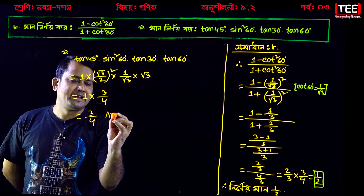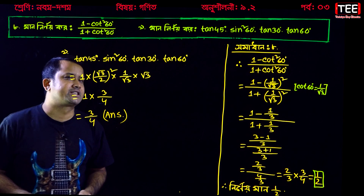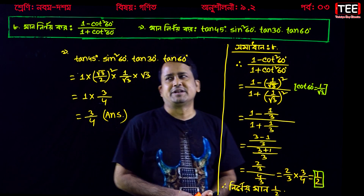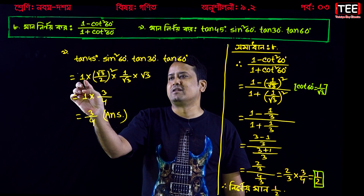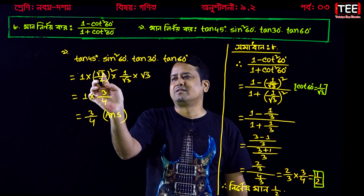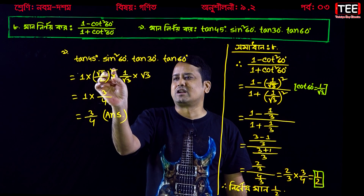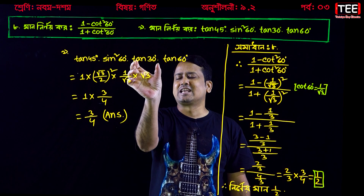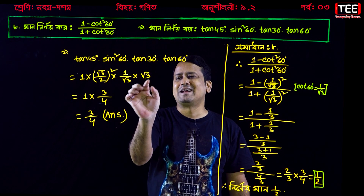This is our final answer. We will take our final answer. So, if you don't understand that, you can find us. We have: tan 45 degrees equals 1, sin 60 degrees equals root 3 by 2, whole square, tan 30 degrees equals 1 by root 3, tan 60 degrees equals root 3.